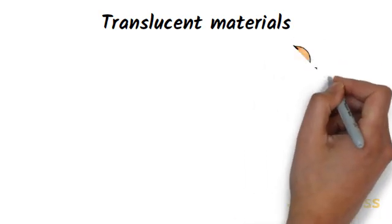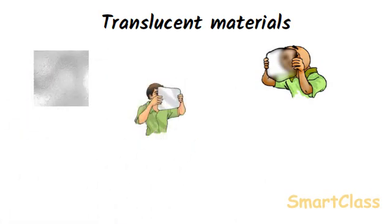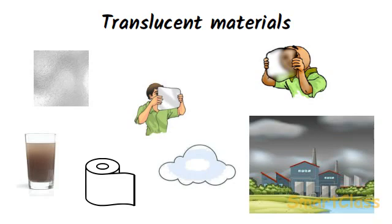Translucent materials are those which allow only some of the light to pass through them. The materials like frosted glass, butter paper, tissue paper, muddy water and clouds are translucent materials. They allow only a part of the light falling on their surface to pass through them, and we cannot see clearly through a translucent material. Clouds are translucent objects. Though we cannot see the sun through clouds on a cloudy day, there is still some light all around because clouds allow some of the sunlight to pass through them. If we can see through an object but not clearly, it is allowing light through only partially, and hence it is a translucent object. Translucent objects absorb a good part of the light falling on them and allow only some light to pass through.